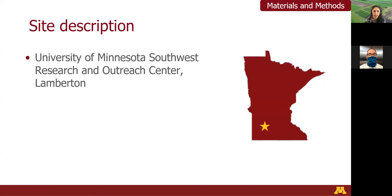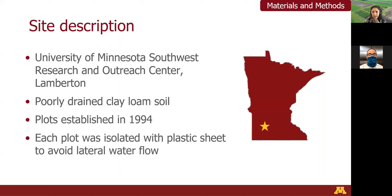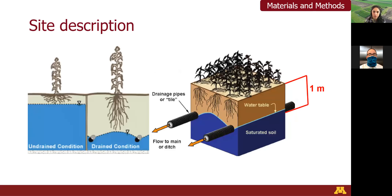This study was conducted at the University of Minnesota Southwest Research and Outreach Center located in Lamberton, represented by the yellow star in this map illustration. The plots were established in 1994 in a poorly drained clay soil. Plastic film was installed in the boundaries of each plot for isolation and to avoid lateral flow, and a tile drainage system was also installed. Tile lines are used to remove excess water, which allows plants to grow more easily. In our study, perforated tile lines with 10 centimeters in diameter were buried into the soil one meter deep.